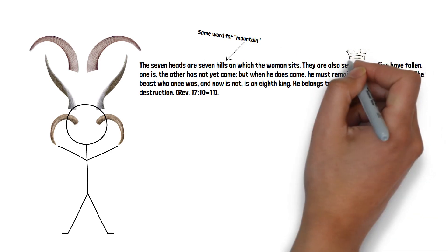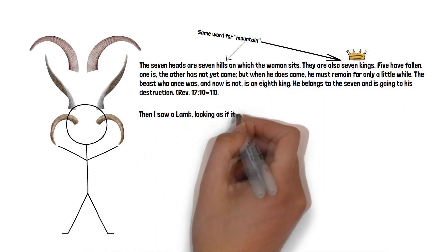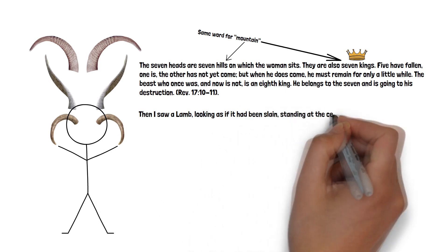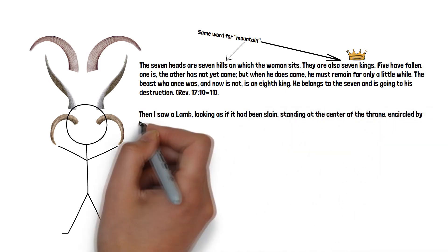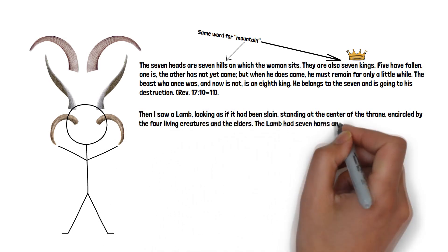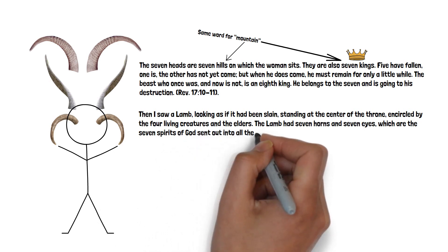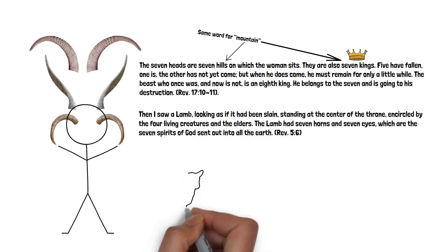And earlier, the Book of Revelation describes horns and heads this way: Then I saw a lamb, looking as if it had been slain, standing at the center of the throne, encircled by the four living creatures and elders. The lamb had seven horns and seven eyes, which are the seven spirits of God sent out into all the earth.